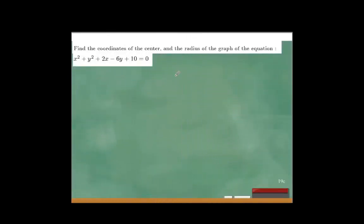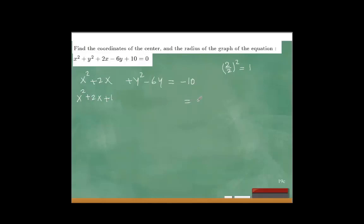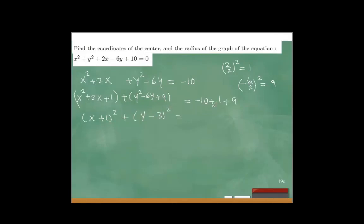For this example, find the center and radius if possible. Gather x² + 2x and y² − 6y, moving 10 to give −10. For x: (2/2)² = 1, add 1 to both sides. For y: (−6/2)² = 9, add 9 to both sides. This gives (x + 1)² + (y − 3)² = 0. This is just a single point, not a true circle.